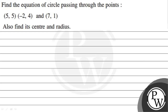Hello. Let's read the given question. The question states: find the equation of circle passing through the points (5,5), (-2,4) and (7,1). Also find its center and radius.